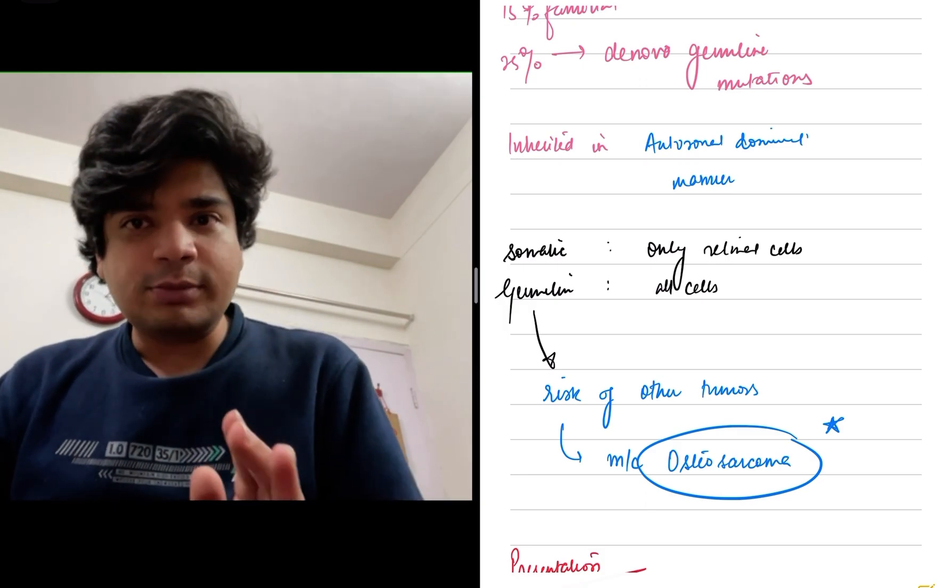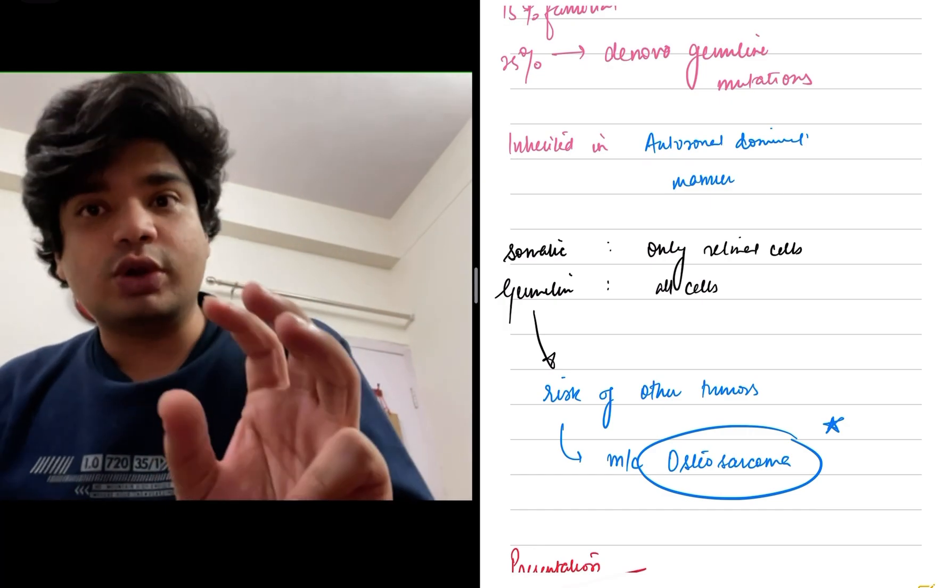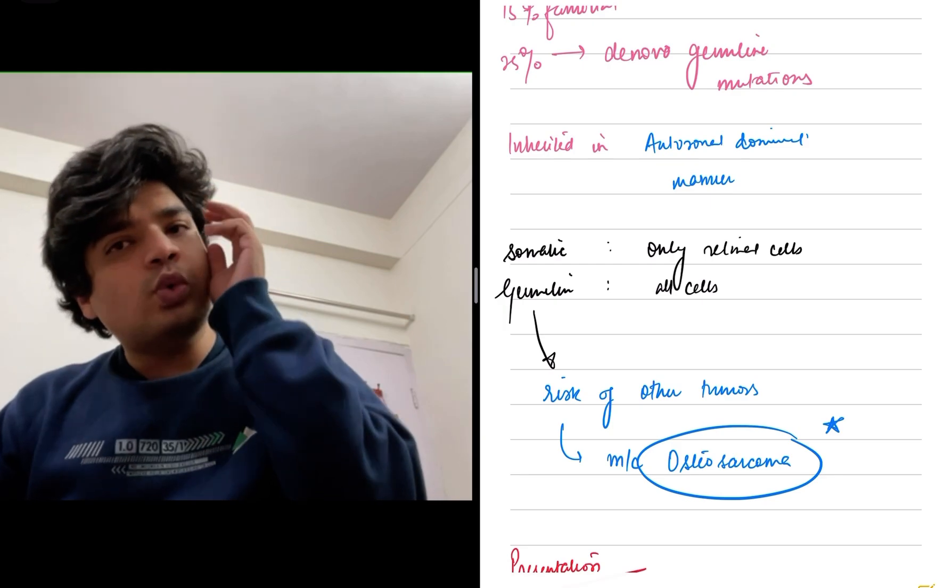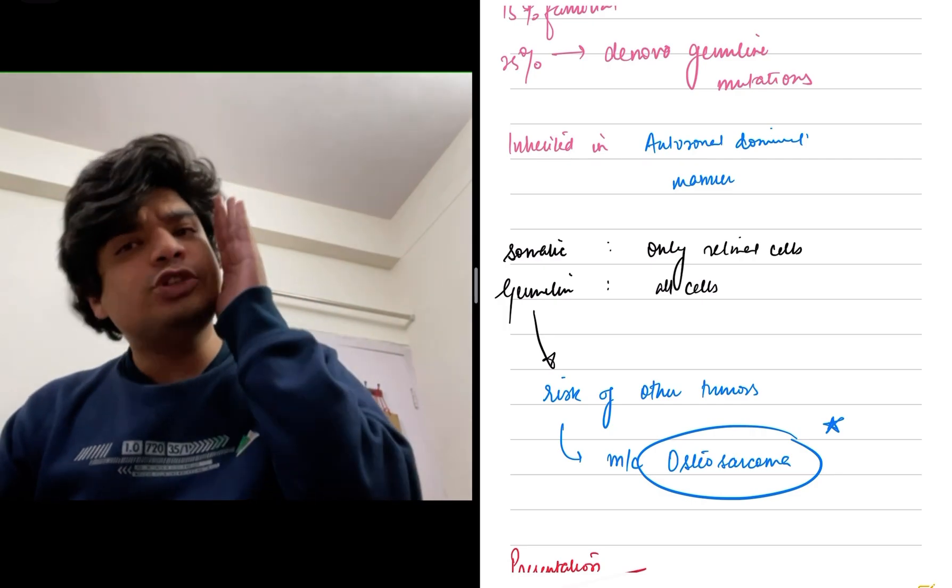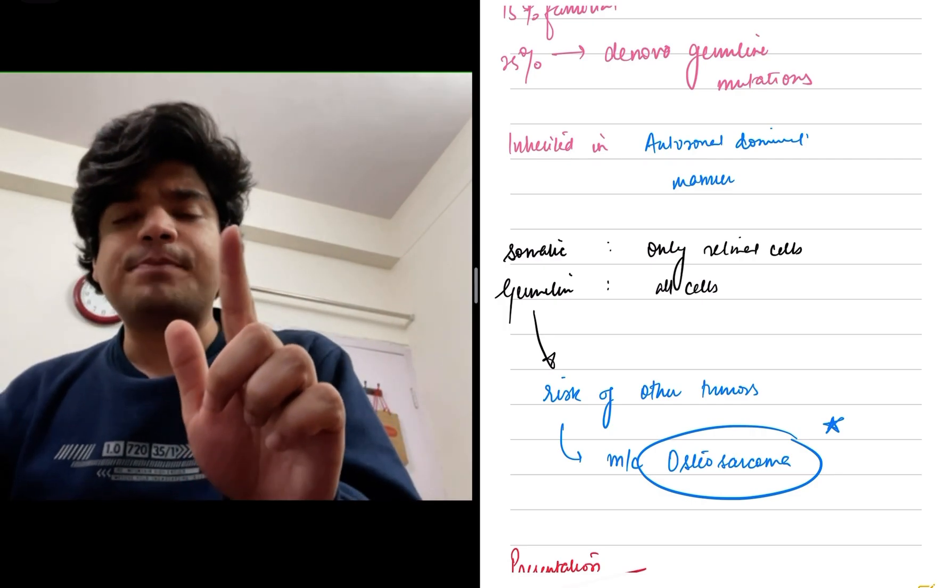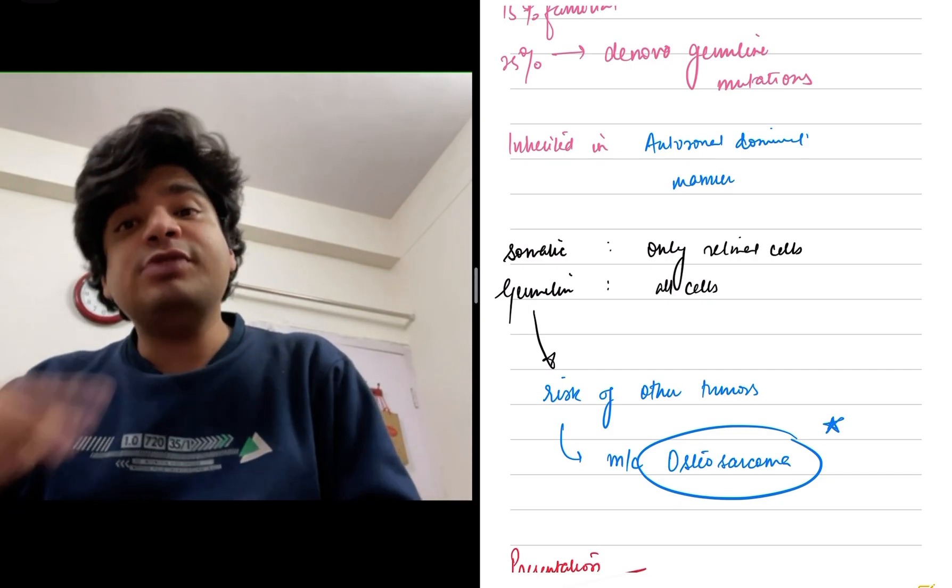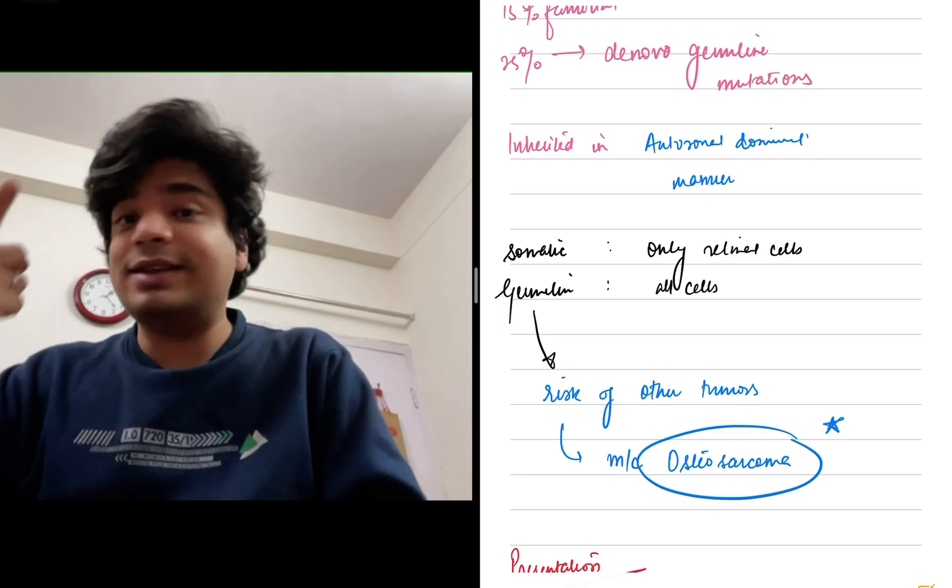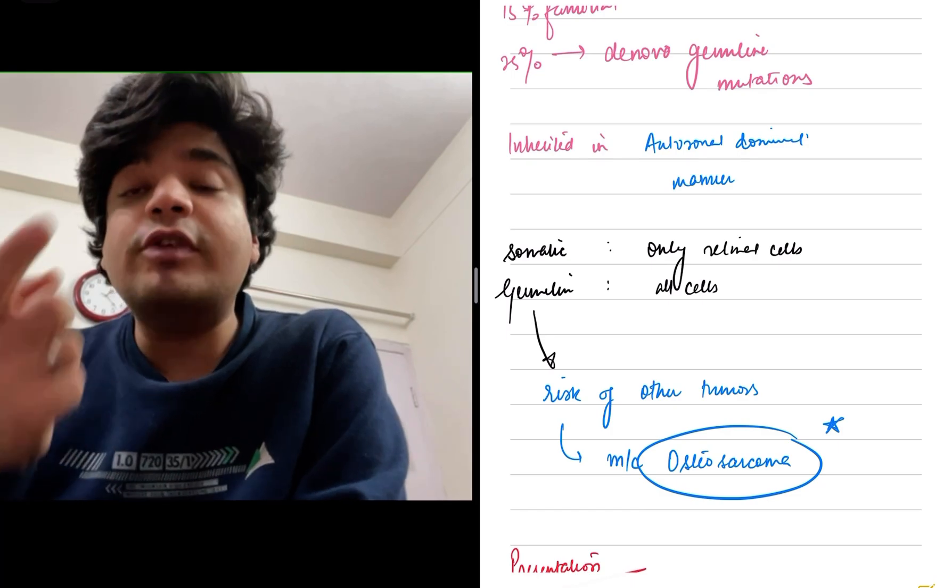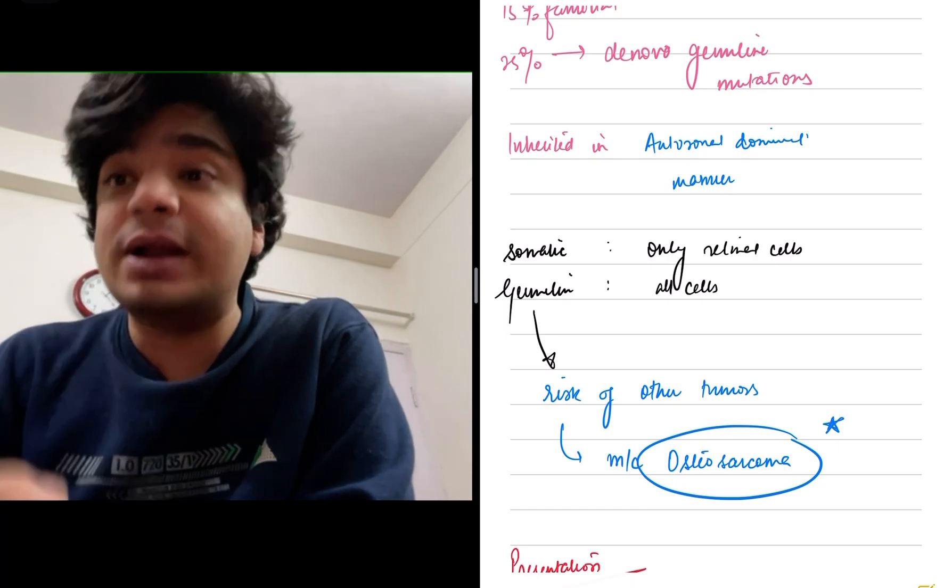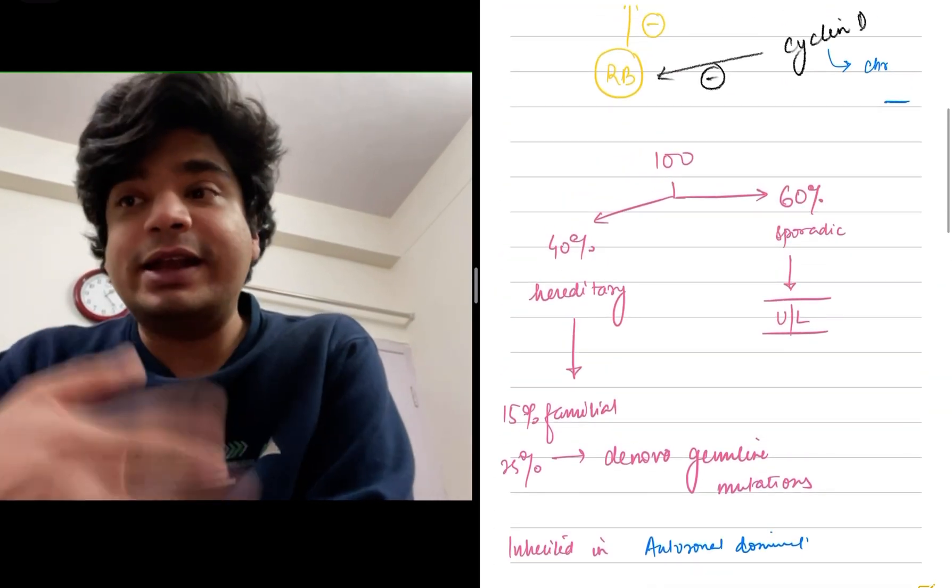The most important difference between germline and somatic: In somatic mutation, the mutation is present only in the retinal cells, so it will mostly be unilateral and unifocal, occurring in only one eye. When it's germline, it's present in entire cells of the body. The first manifestation is most commonly in the form of retinoblastoma. It's more likely to present with bilateral retinoblastoma, and it is more likely to be multifocal.